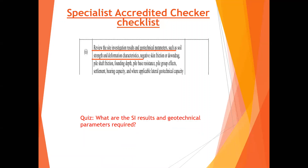If you want to use the beta sigma-prime method, you need to do the consolidation test to get the overconsolidation ratio. This is why soil investigation should be the first workshop topic - it is the most fundamental. You cannot understand soil investigation, I give you a soil investigation report and you don't know how to use it; I ask you to plan soil investigation and you also cannot plan it.